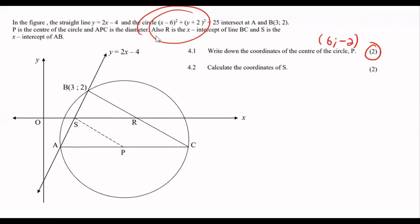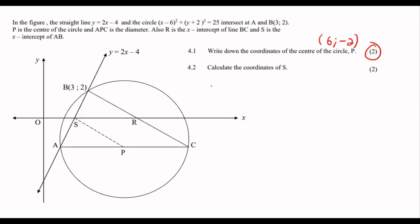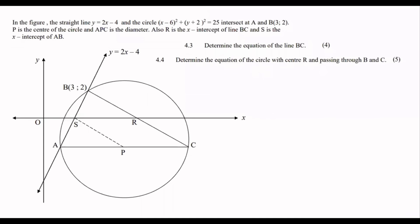Calculate the coordinates of S. S is the x-intercept of that line, so to find the x-intercept you make y equal to zero, and then you'd find that x is equal to 2. So we've now found that P is (6, -2) and S is (2, 0).